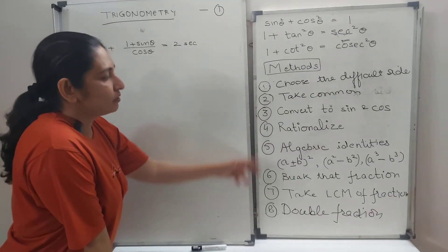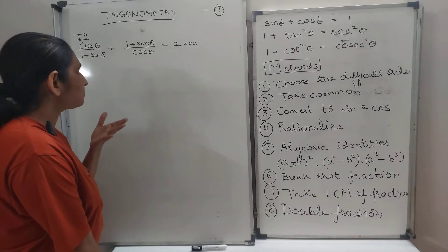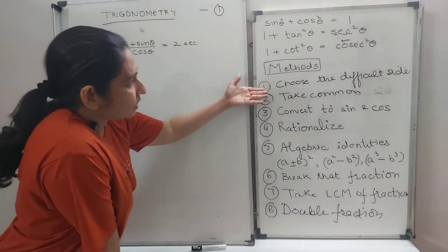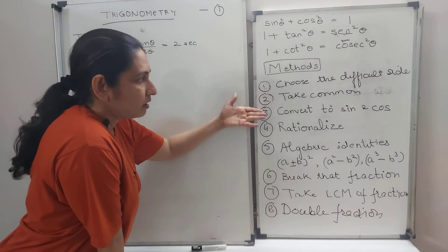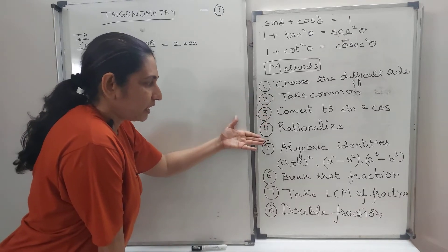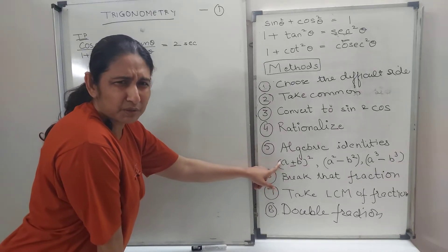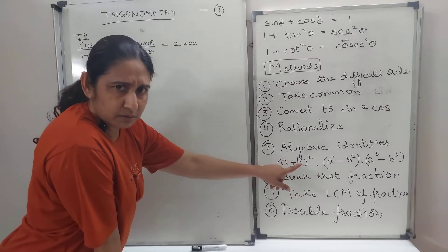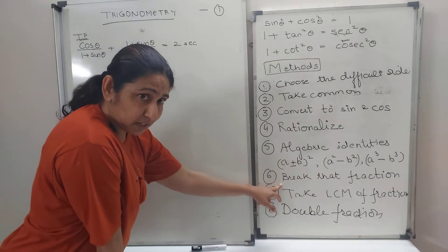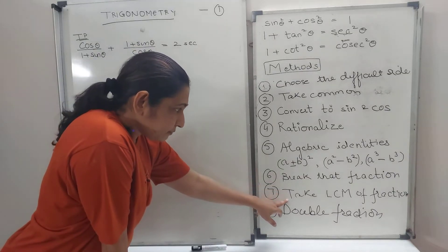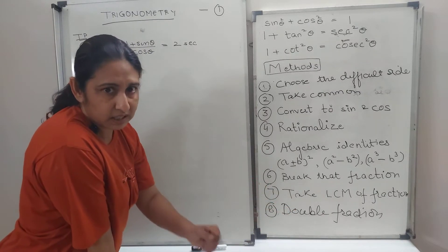You'll choose two, three, four, how many ever required, depending on the question. What I've written is, choose the difficult side. Take common. Then, convert into sine and cos. Rationalize algebraic identities like you've done it before, a plus b whole square and a square minus b square is equal to a plus b, a minus b, those old identities. Then breaking the fraction. This is something new probably. Then take LCM of two fractions. Double fraction.